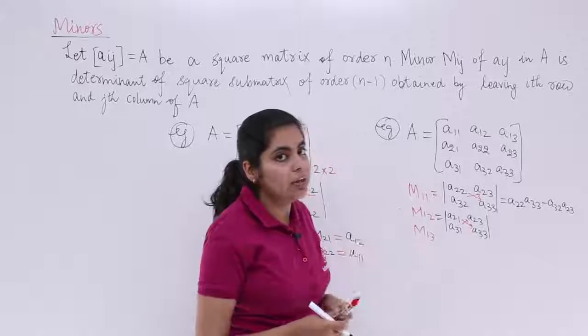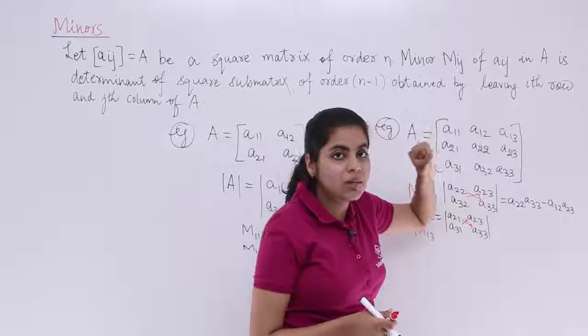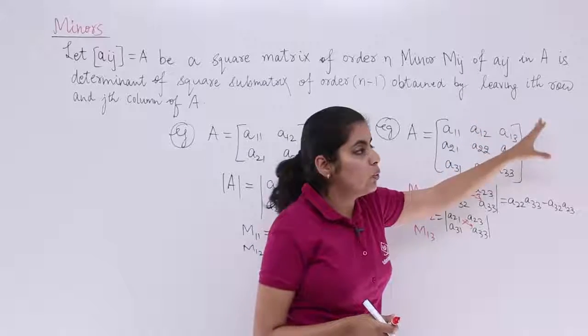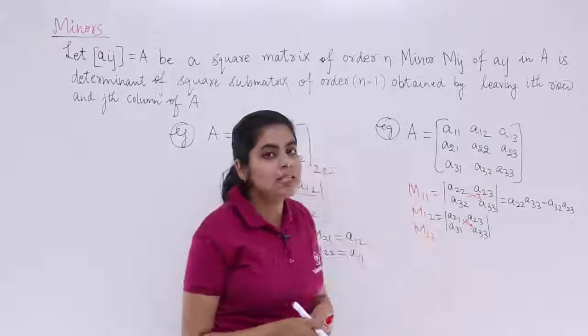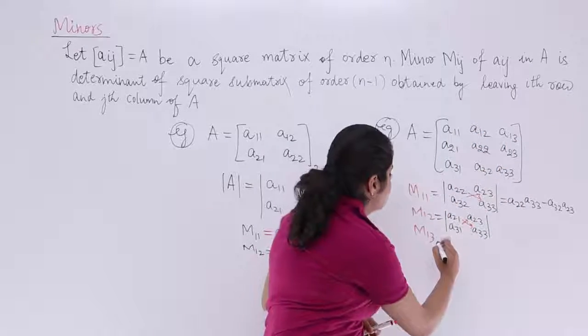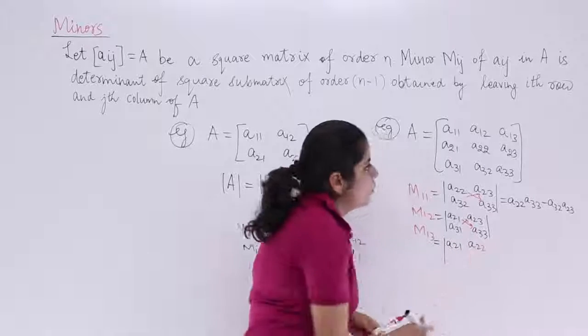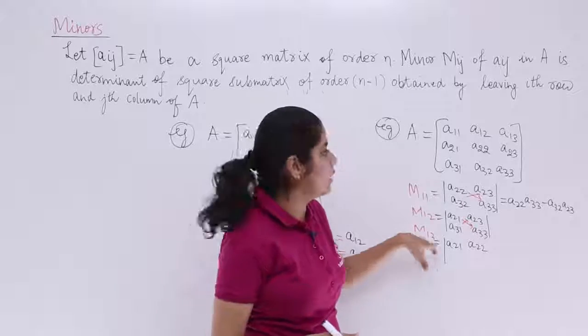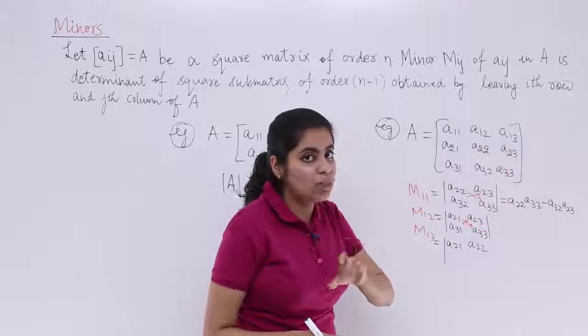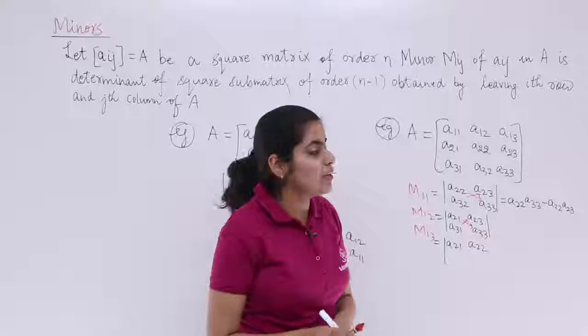Moving for M13. M13 is related to A13. Leave this row, leave that column. You are left with a sub-matrix. Let's write the sub-matrix quickly. It is A21, A22 because we are leaving it for A13. So third column cannot be included. First row cannot be included, right?